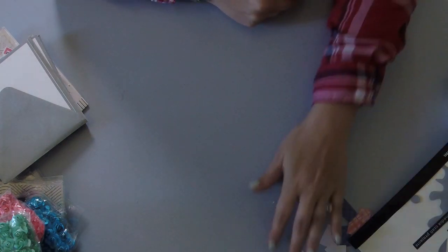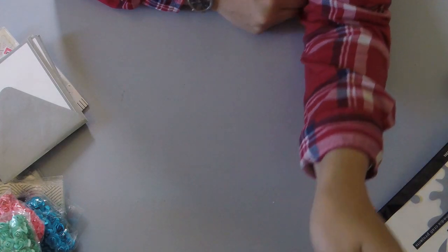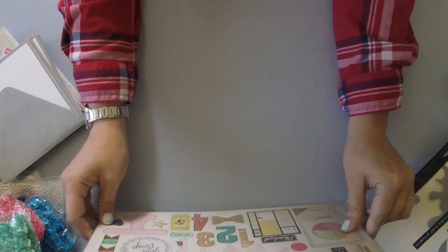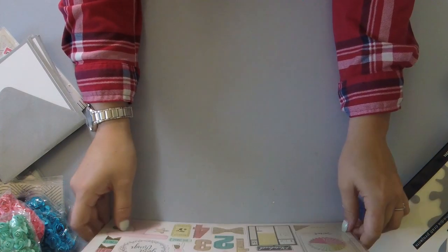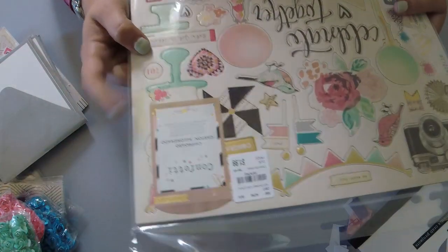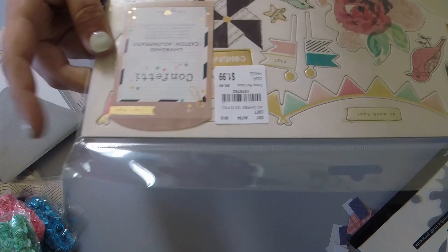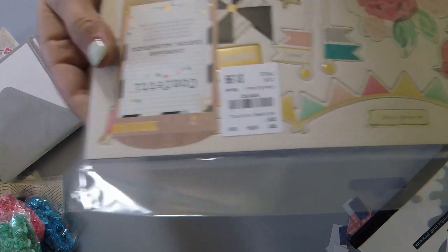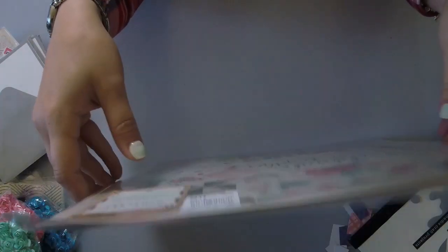And then I only had one of these Maggie Holmes confetti chip boards at my location down in Puyallup. So you guys can check it out. It's one nine seven six seven six two. And they're a dollar ninety nine right now. So that's not bad.